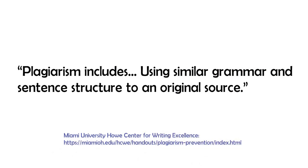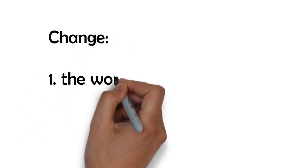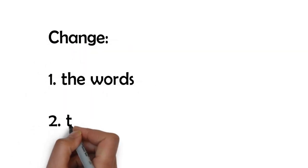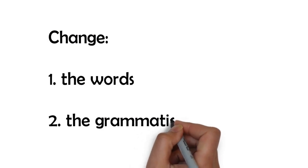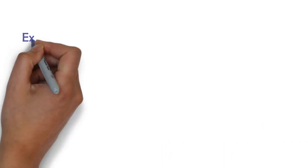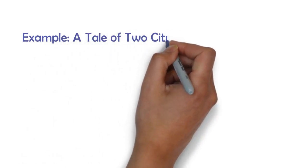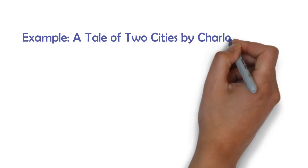Plagiarism includes using similar grammar and sentence structure to an original source. What this means is that you cannot just take someone else's text, throw some synonyms into it and call it your own. The minimum standard for avoiding plagiarism is that you change two things: one, the words and two, the grammatical structure. We can illustrate this with an example from the most famous opening line in all of English literature, from A Tale of Two Cities by Charles Dickens.